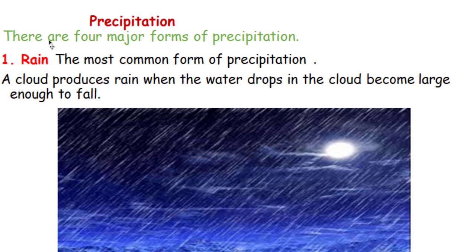Precipitation: there are four major forms of precipitation. The first is rain — the most common form. A cloud produces rain when the water drops inside become large enough to fall. When gas changes into liquid, we call that condensation, and it becomes rain.